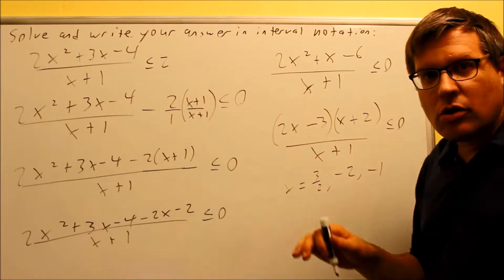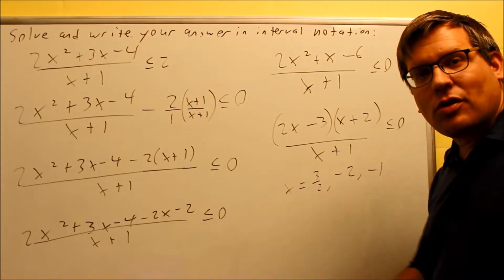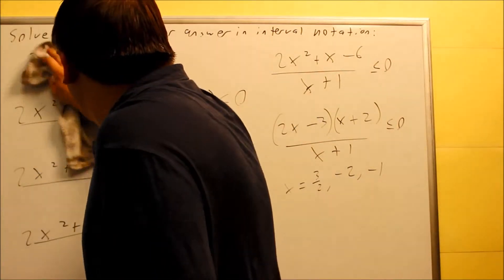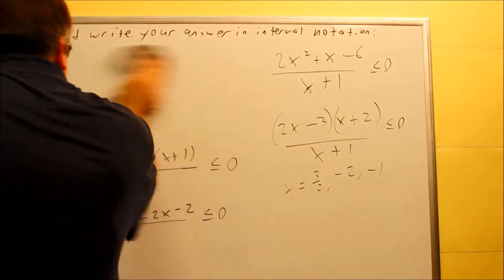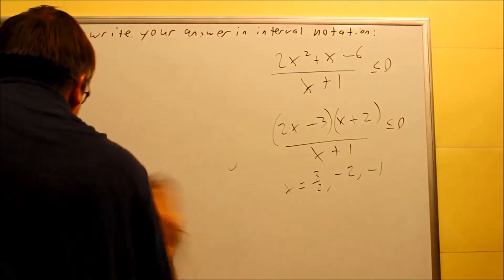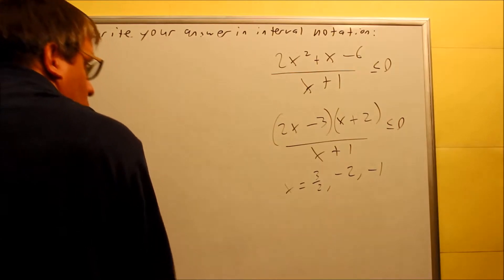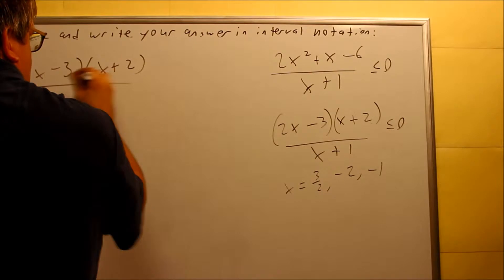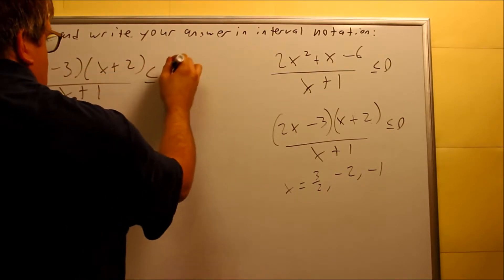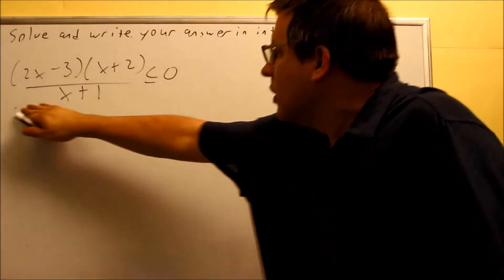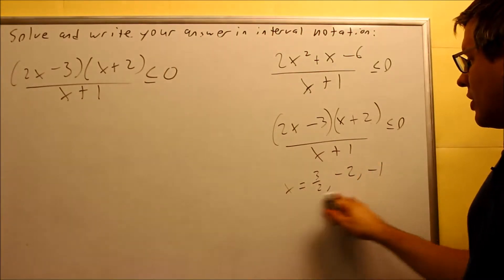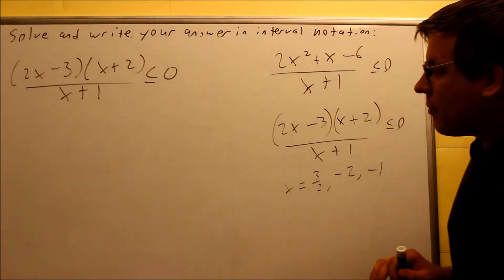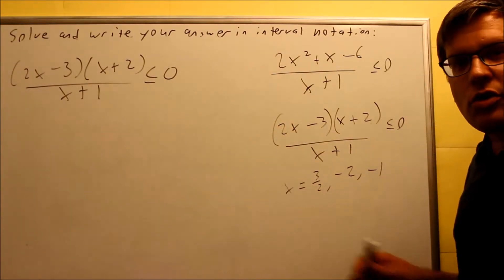We're going to do both methods — the number line method and the table method. I'll use the table method first. So over here, I'm going to erase this and rewrite what I have. I have 2x minus 3 over x plus 2 times x plus 1, less than or equal to 0. This is the new one that I came up with. We have these three critical numbers, and we're going to do the table method. We start now with this.